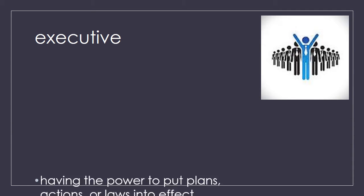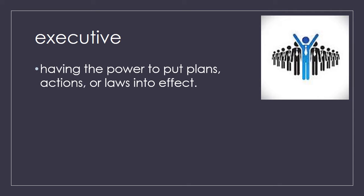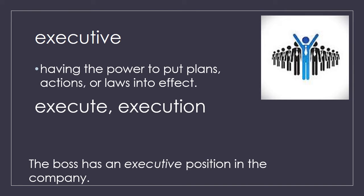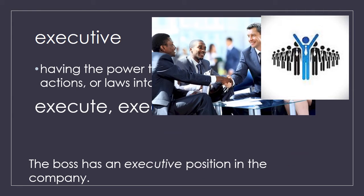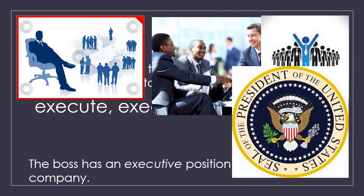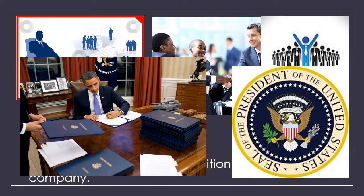Your next word is executive. Executive means having the power to put plans, actions, or laws into effect. You get the word executive from execute and execution, which means to act. When we think of an executive, I want you to consider the word boss — an executive is a boss who has power over a company or governmental entity. When thinking of executive in terms of our government, think of the president of the United States, who carries out the laws and makes actions regarding how the laws are enforced.